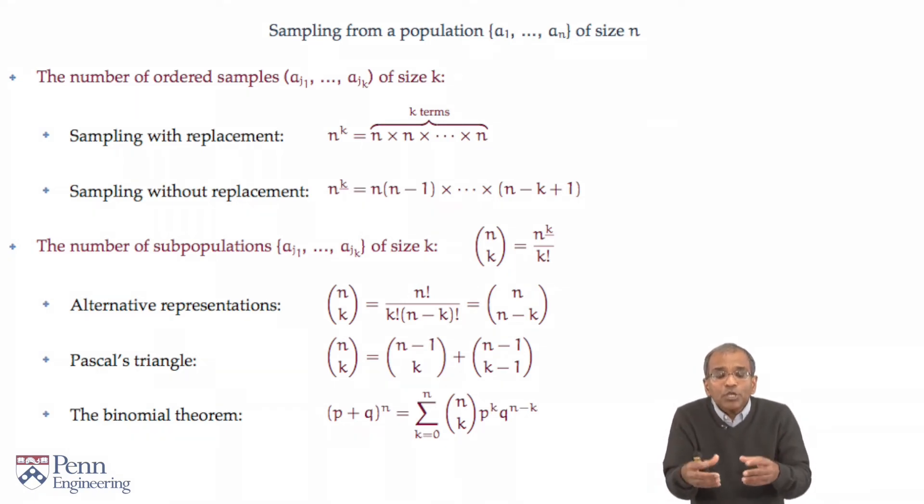Pascal's triangle allows you to decompose binomial coefficients in terms of the rows in Pascal's triangle. n choose k can be decomposed in terms of the binomial coefficients immediately below it at the base of a triangle, in terms of n minus 1 choose k and n minus 1 choose k minus 1.